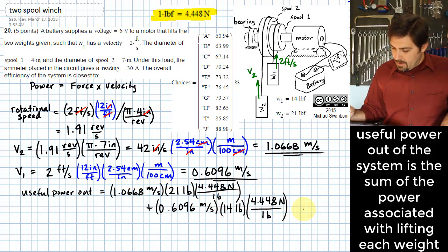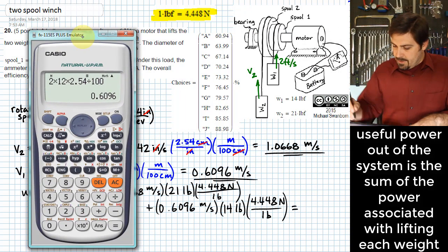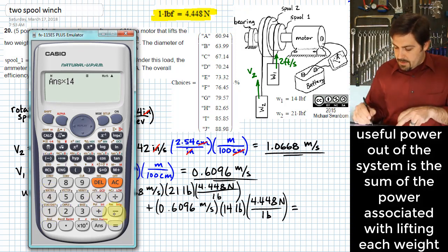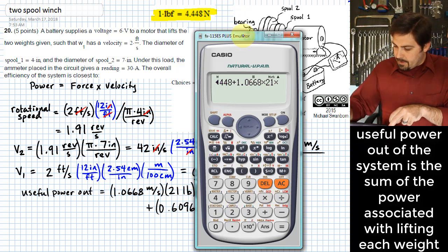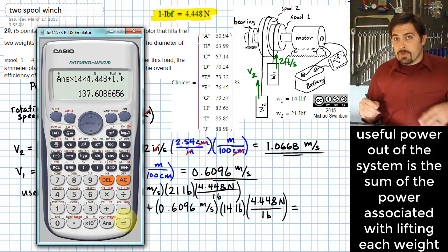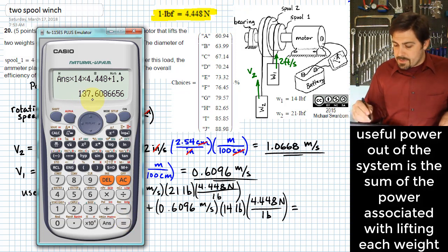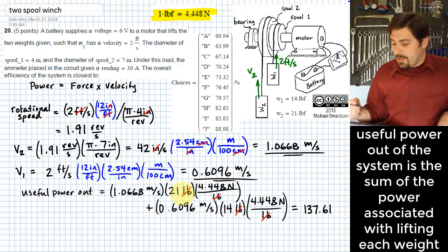After punching all of these into my calculator—I've got 0.6096 times 14 times 4.448, and then to that I will add 1.0668 times 21 times 4.448—this gives me the number of watts I get out of the system: 137.61. How do I know it's watts? Well, we can look at these units here. The pounds cancel, and I end up with newton meter per second. A newton meter per second is a watt.